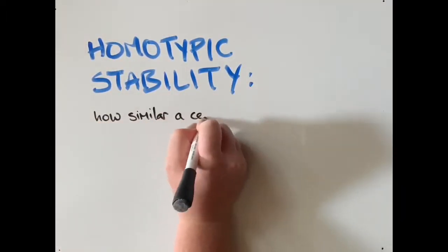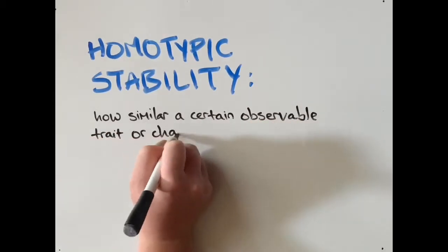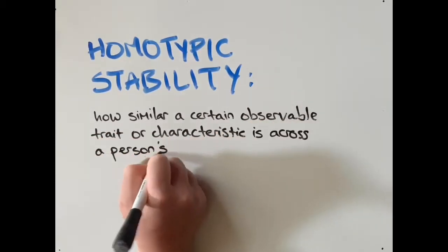Homotypic stability is how similar a certain observable trait or characteristic is across a person's lifetime.